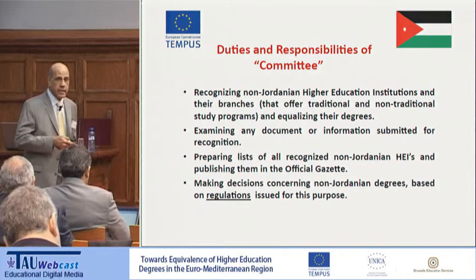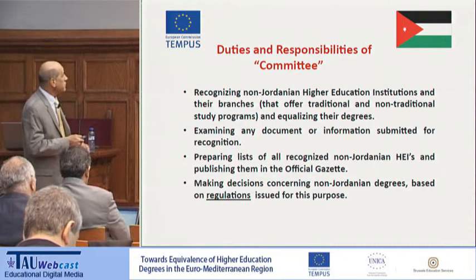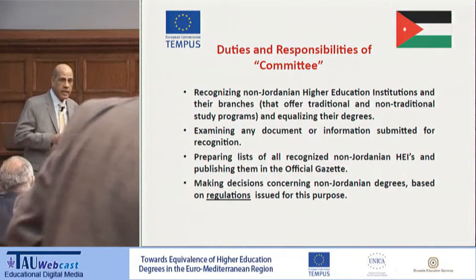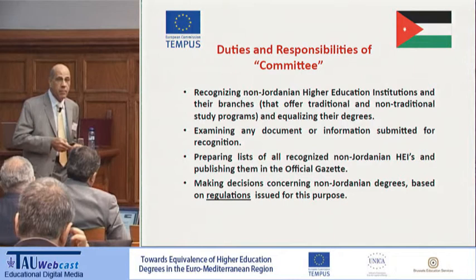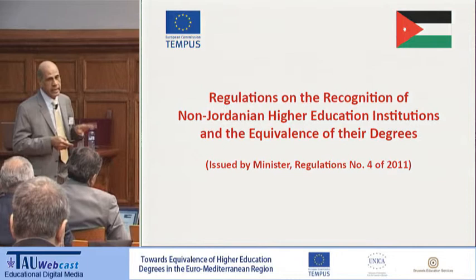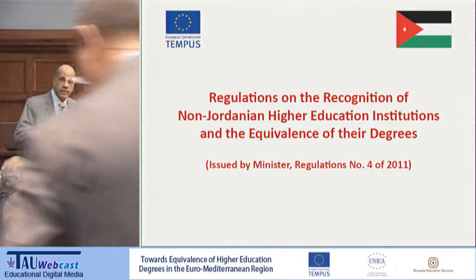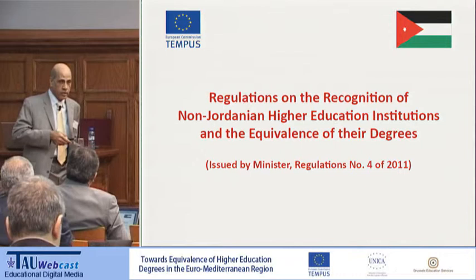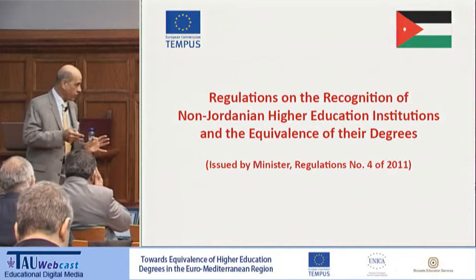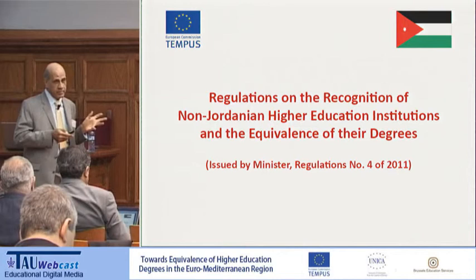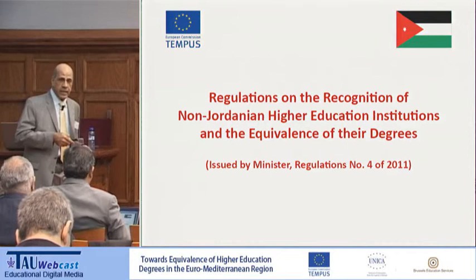Based on that, there are bylaws issued by the cabinet that detail how it is done. The committee lasts usually four years — it is a very high-level committee chaired by the minister, with the deputy minister, a deputy minister of education, and 12 experts. The scope of the committee covers recognizing institutions outside Jordan and how equivalence is done. The actual day-to-day details are issued by regulations from the minister of higher education and scientific research.